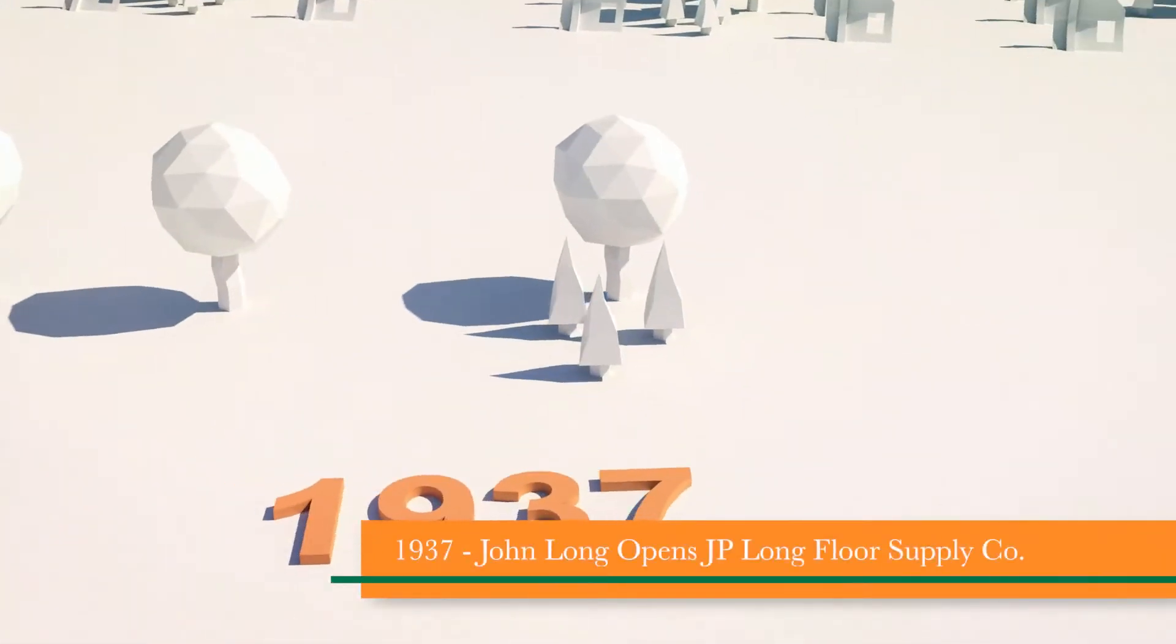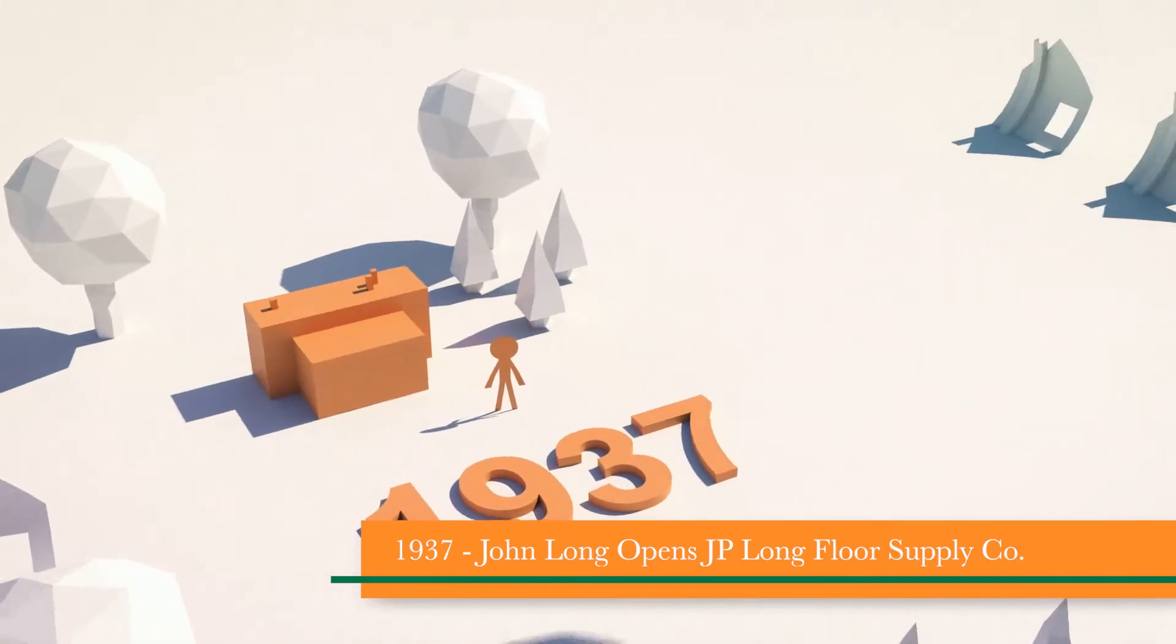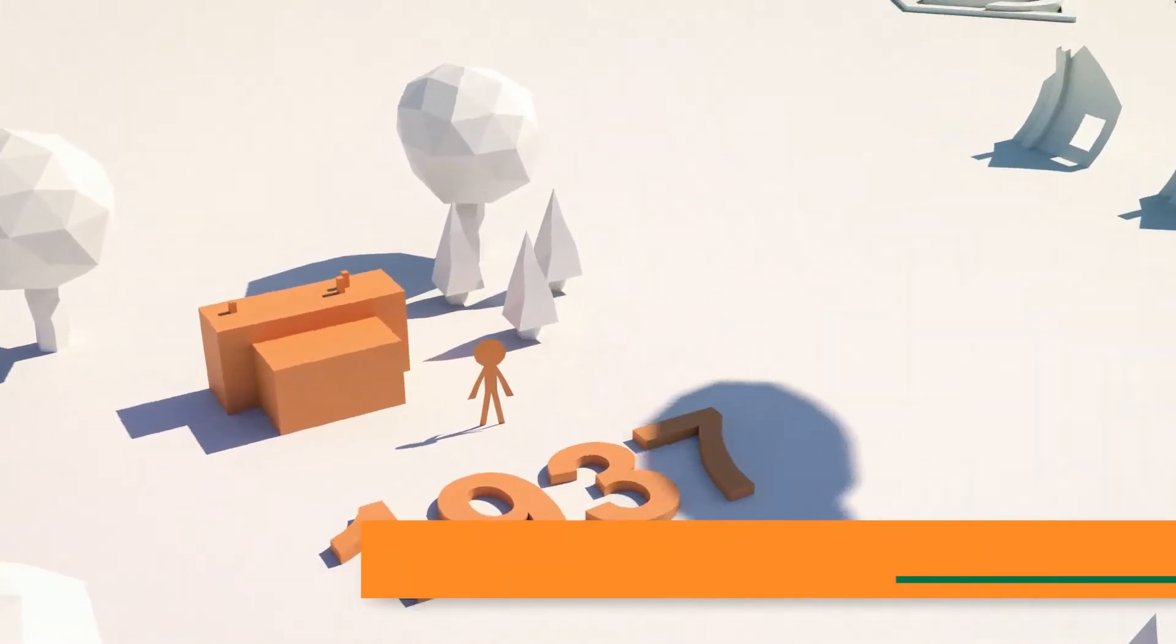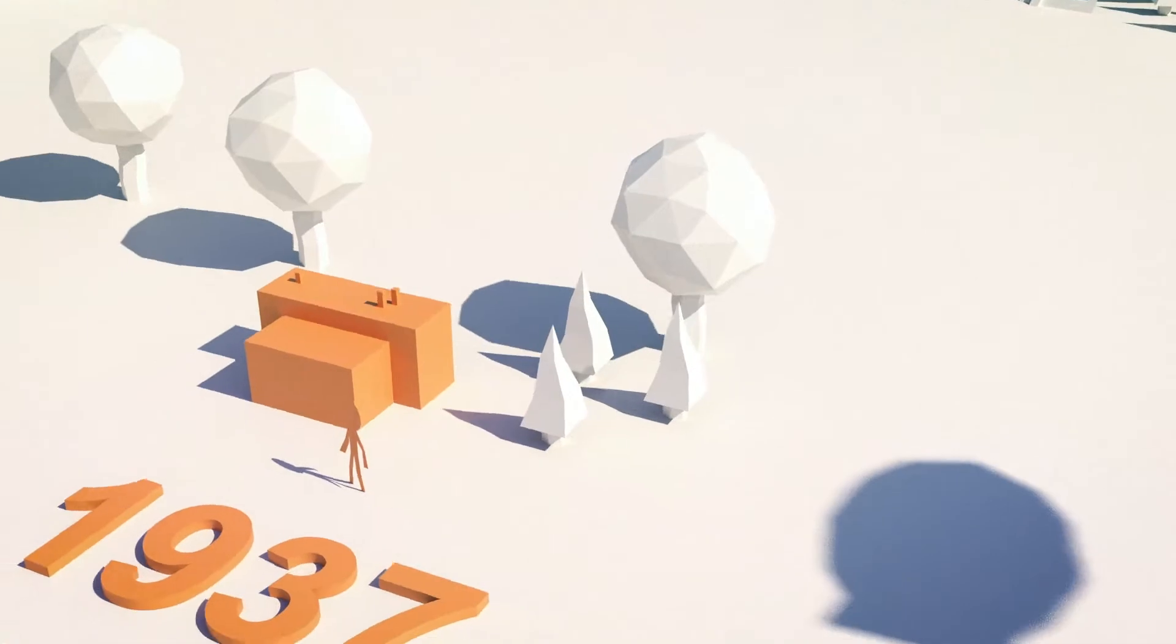In 1937, John Long opens J.P. Long Floor Supply Company, a Porter Cable sanding equipment and sundries distributor.